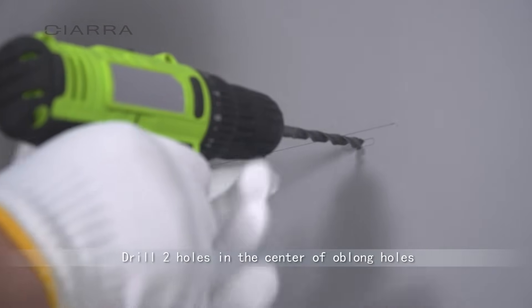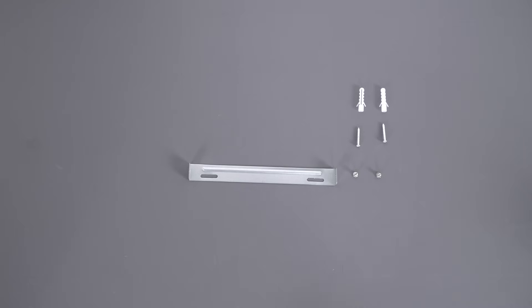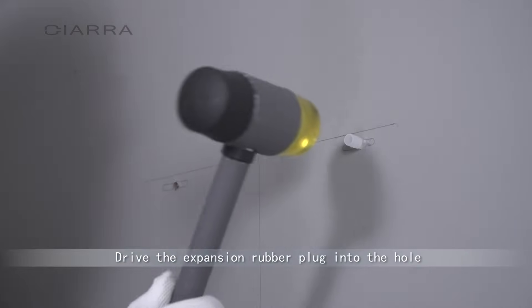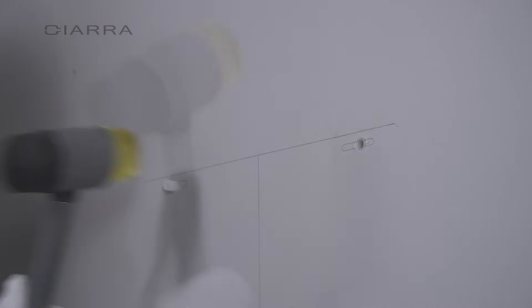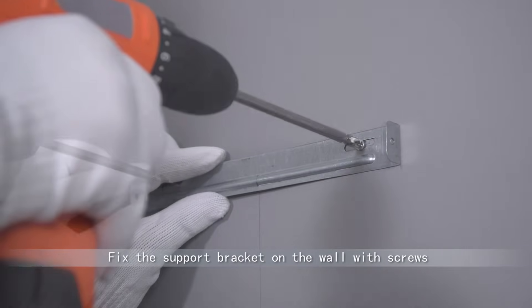Drill two holes in the center of oblong holes. Drive the expansion rubber plug into the hole. Fix the support bracket on the wall with screws.